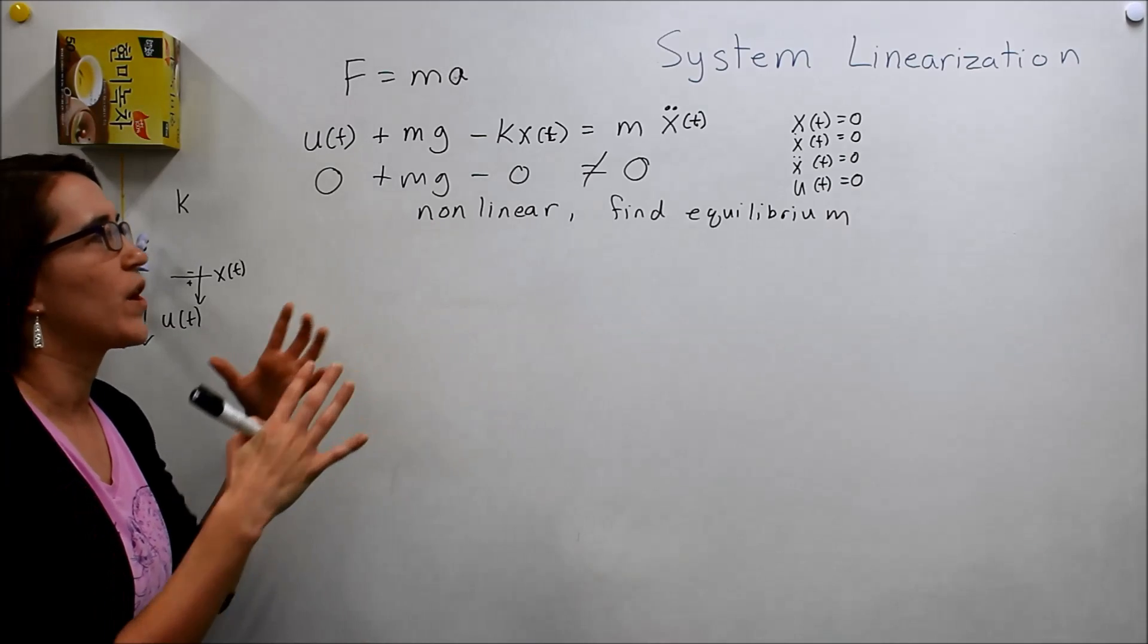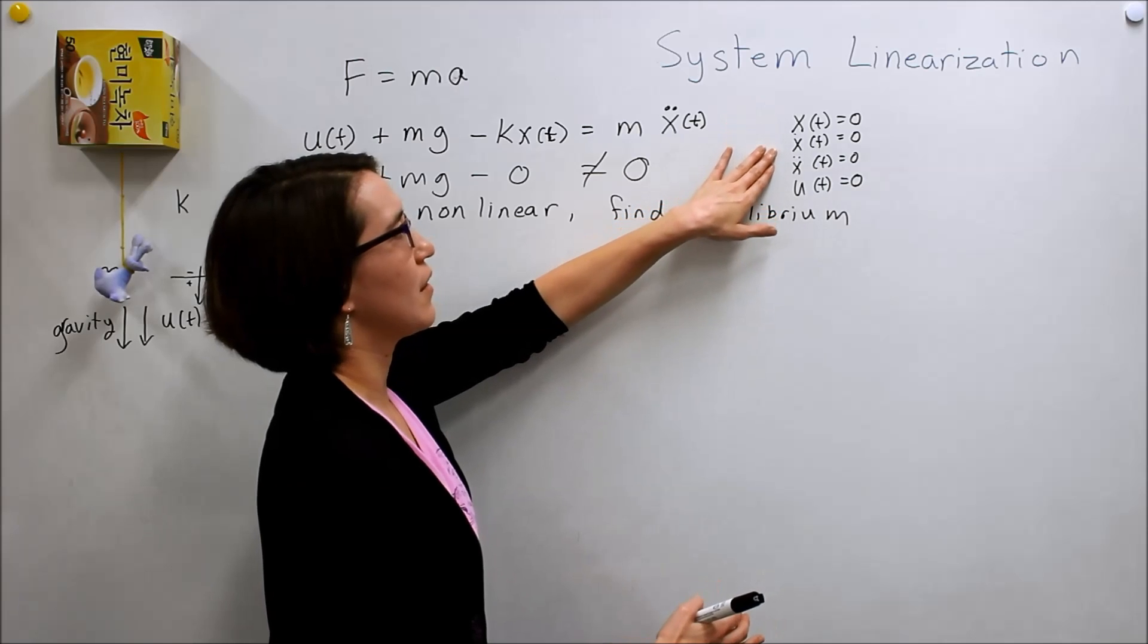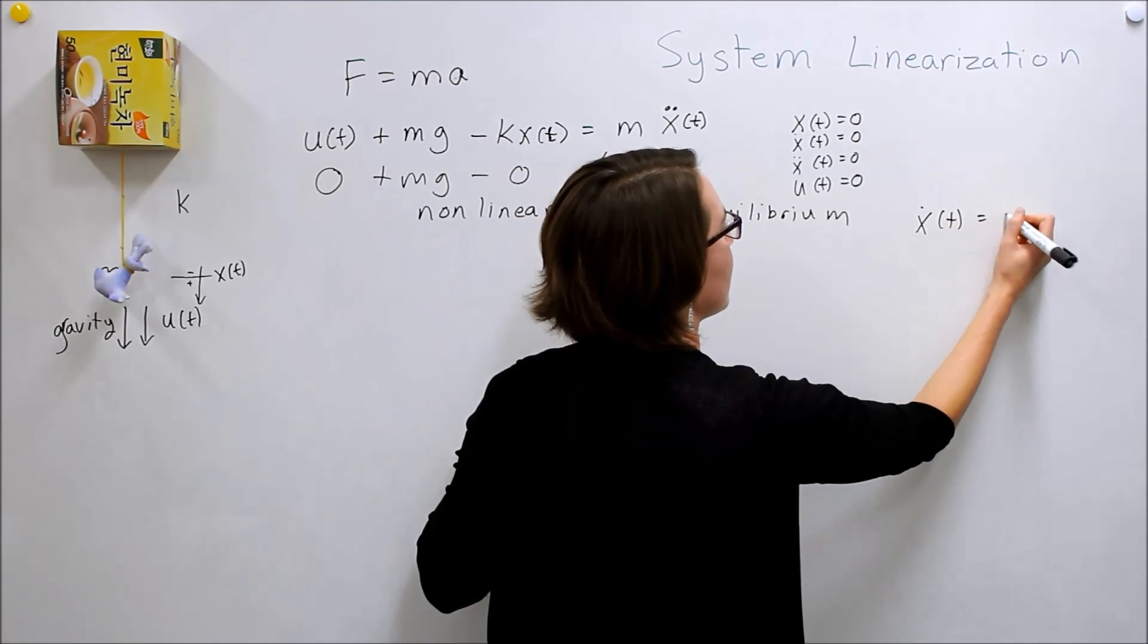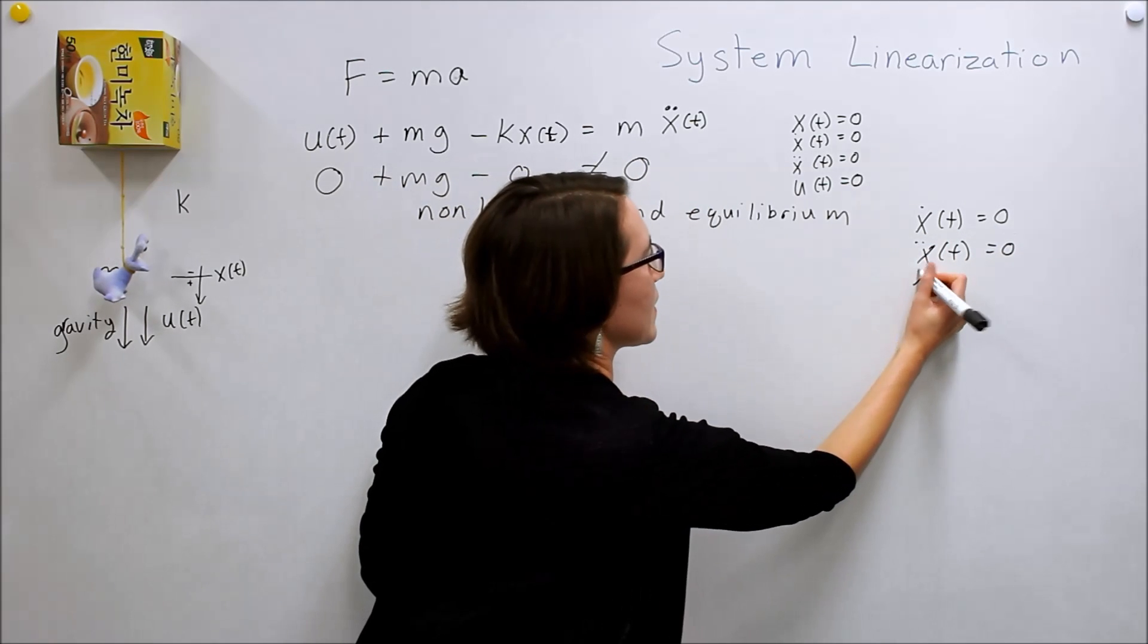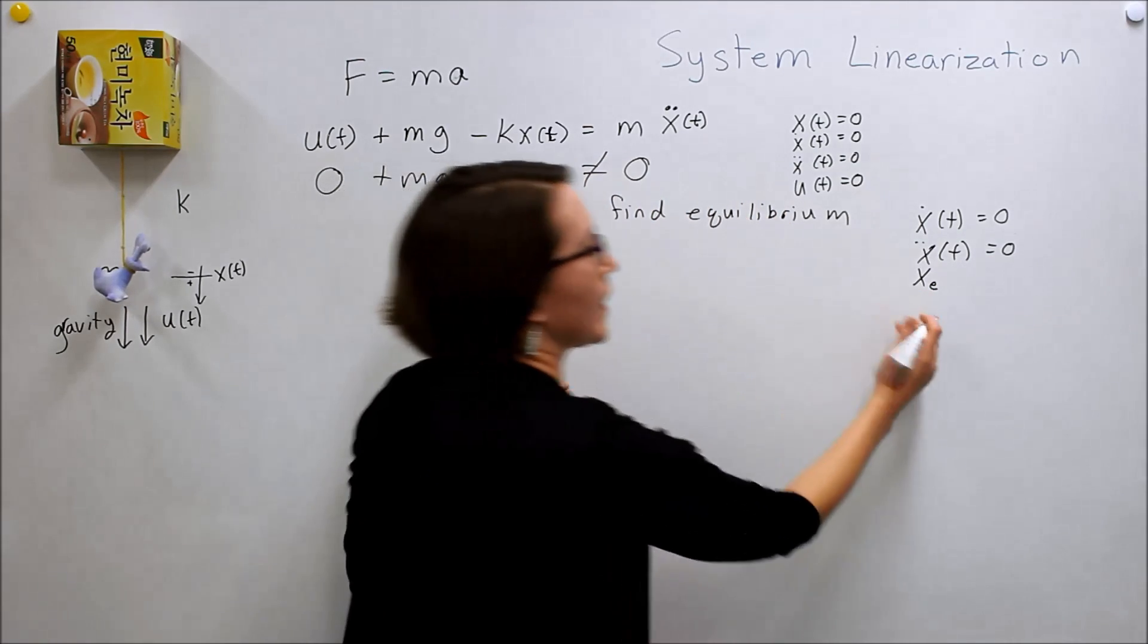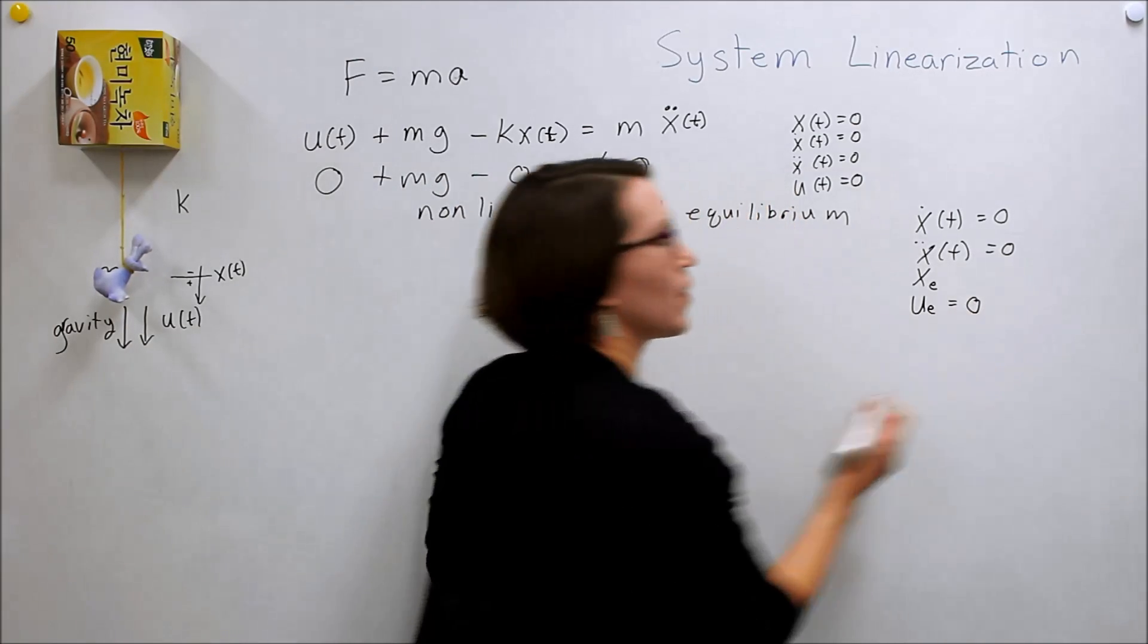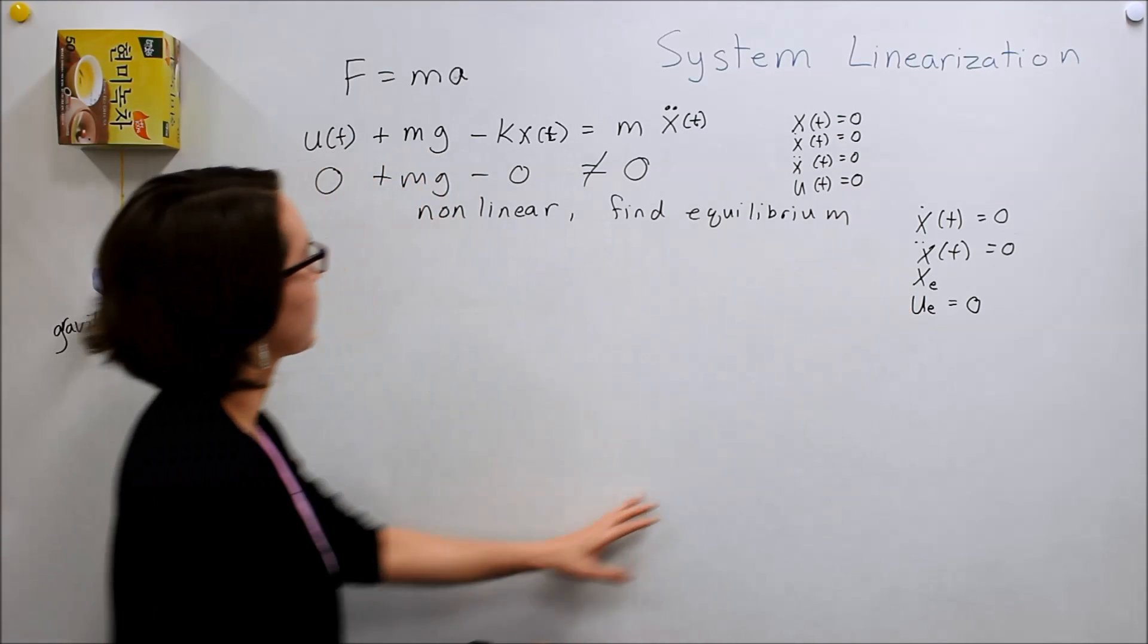What this means is when our system is at rest. So, our system is at rest when nothing is moving. So, the dynamics x dot and x double dot are equal to zero. And we want to find the position. We're going to call it equilibrium value of x. And we have an equilibrium value of the input. We're assuming that that's going to be zero. So, no input. And we want to find the equilibrium value of x.